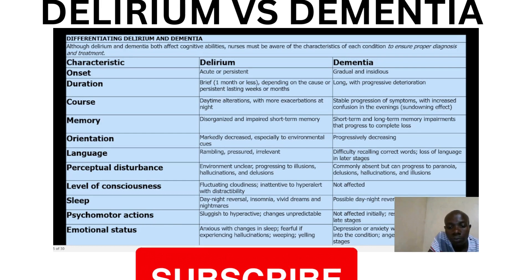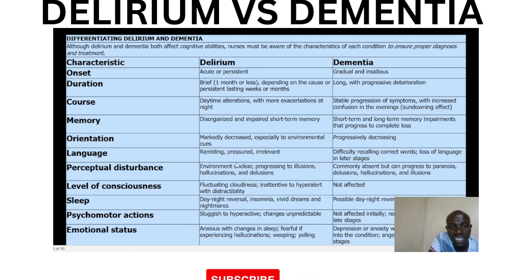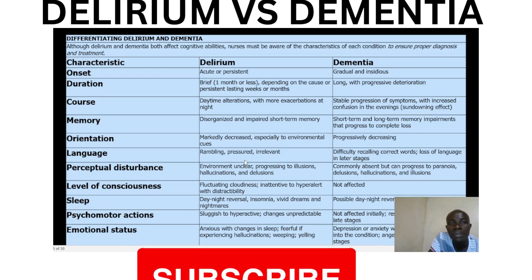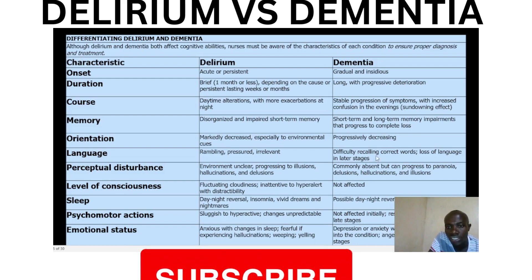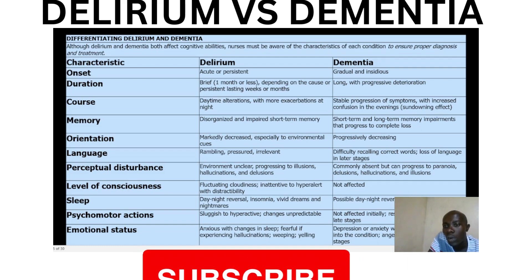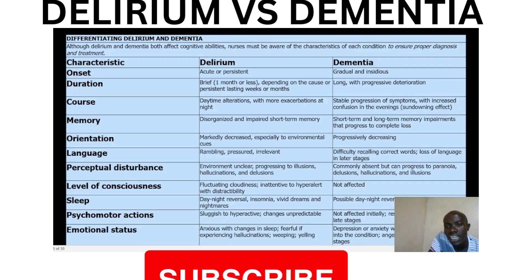In terms of language, in delirium it is rambling, pressured, and sometimes irrelevant. Whereas in dementia, we have difficulty recalling correct words, with loss of language occurring in the later stages.